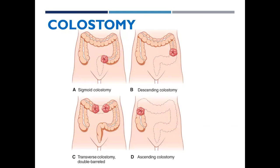A colostomy is a surgical procedure in the abdomen, and the location will determine the consistency of the feces eliminated as well as the need to wear an ostomy appliance. The closer the colostomy is to the ascending colon, the more liquid and continuous the drainage will be. In contrast, a colostomy close to the sigmoid colon will produce solid feces. Sigmoid colostomies can often be controlled by diet and irrigation, so a client may not need to wear an appliance. We need to educate those patients to maintain a strict diet and an irrigation schedule.